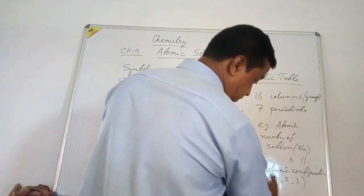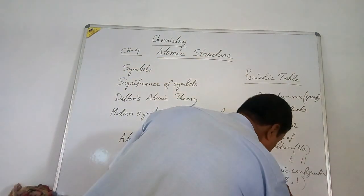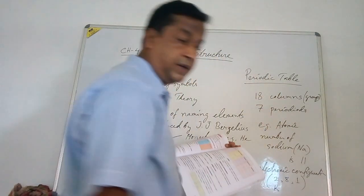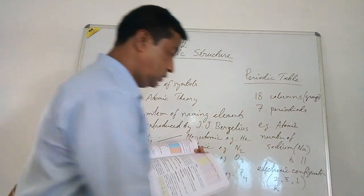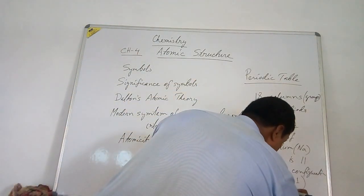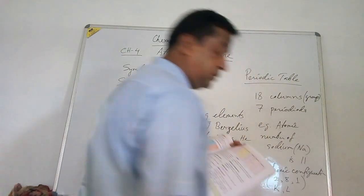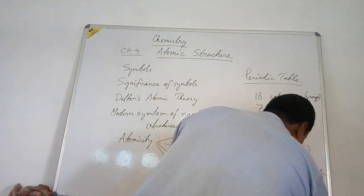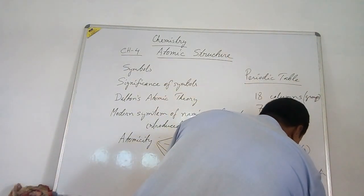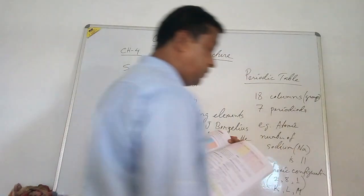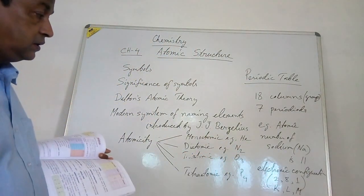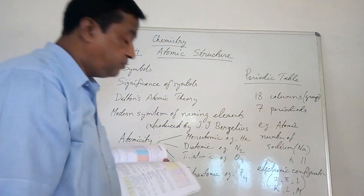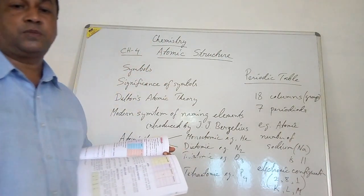This means in the first shell, which is the K shell, the number of electrons is 2. In the L shell, the number of electrons is 8. And in the M shell, the number of electrons is 1.